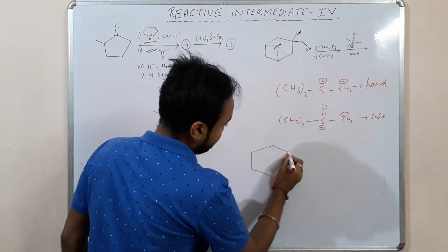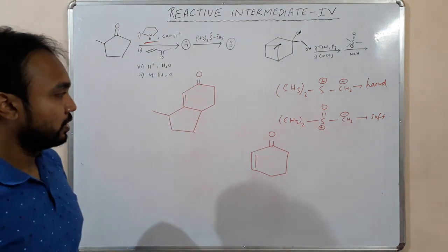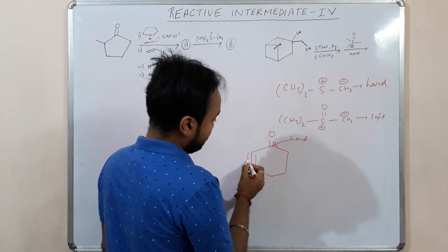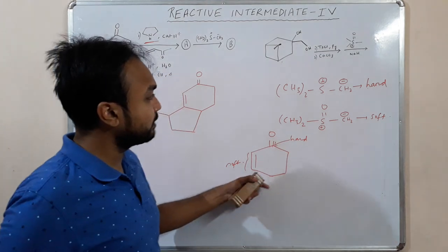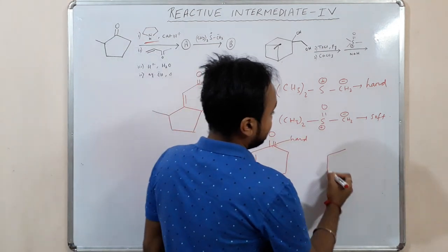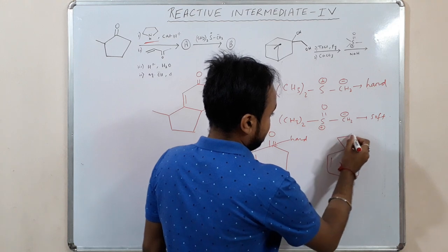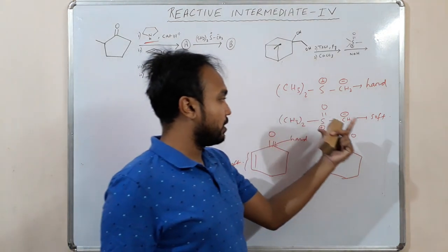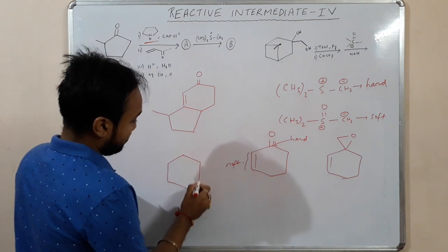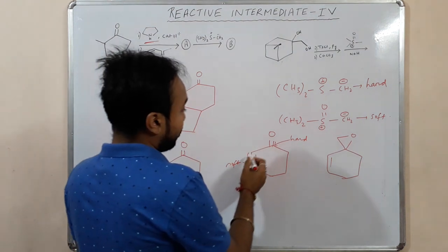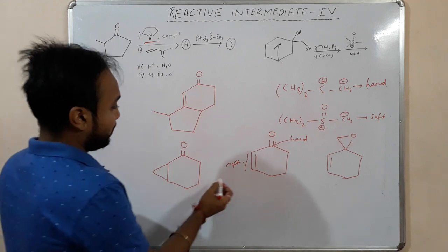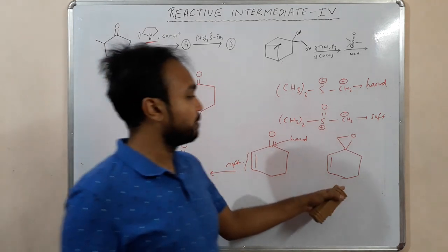If we have a system like this, this carbonyl carbon is hard and these alkene carbons are soft. In the presence of a sulphur ylide which is hard, this sulphur ylide attacks the hard center to form an epoxide. But if we use the soft sulphoxonium ylide, the soft double bond will undergo reaction and it will form a cyclopropane ring.